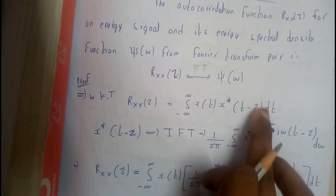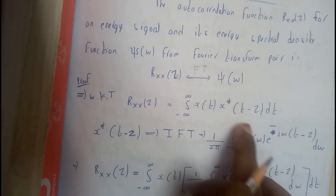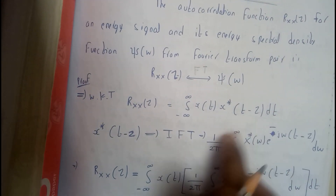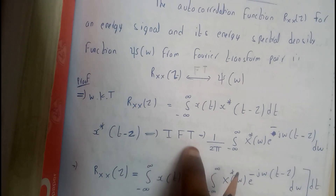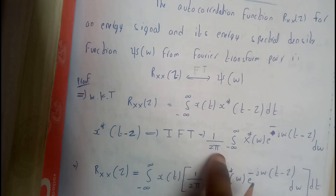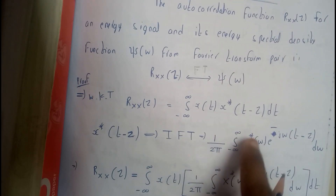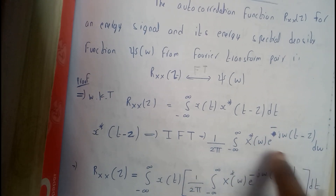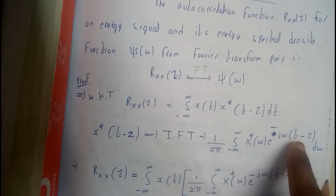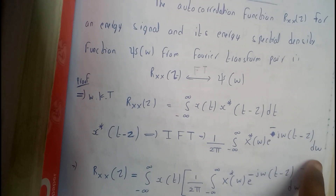So if we apply the inverse Fourier transform to this, we will be getting 1 by 2pi integral from minus infinity to infinity of X conjugate of omega into e to the power of minus j omega times (T minus Z), d omega.